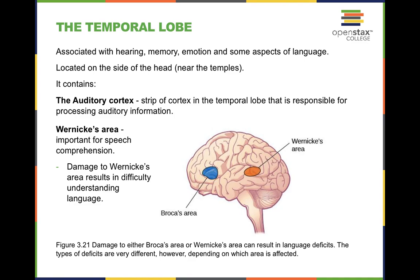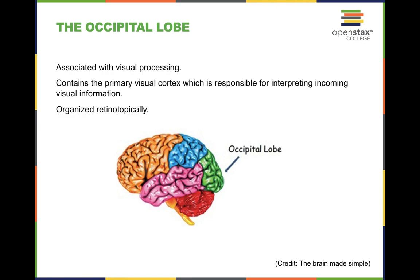The frontal lobe is really important for high-level processing; the parietal lobe handles your senses. The temporal lobe is easier to remember because it's near the temple. The temporal lobe contains the auditory cortex and is overall important for speech comprehension. For a test, understanding the difference between Broca's and Wernicke's is really important: Broca's is actually being able to say things; Wernicke's is understanding what people are saying. When there's damage to Wernicke's, you can expect difficulty with comprehension.